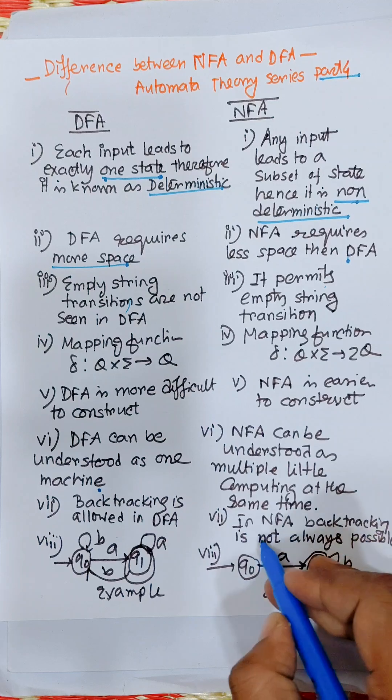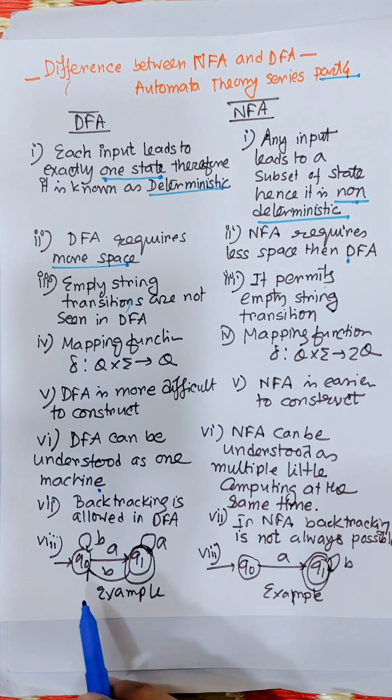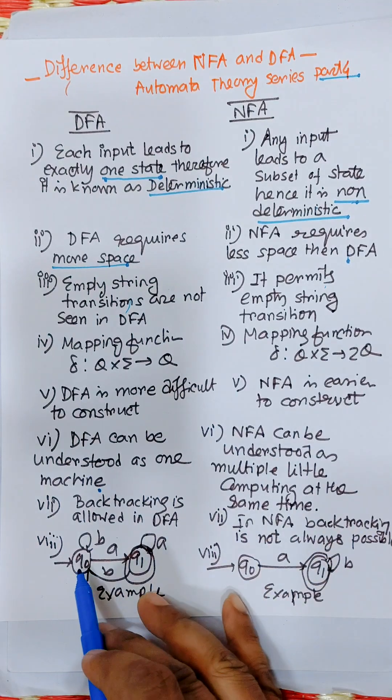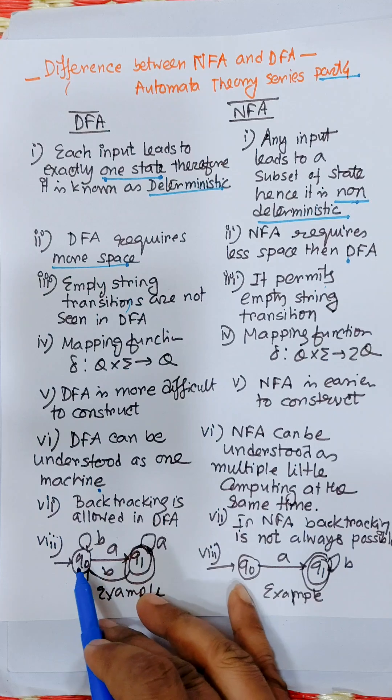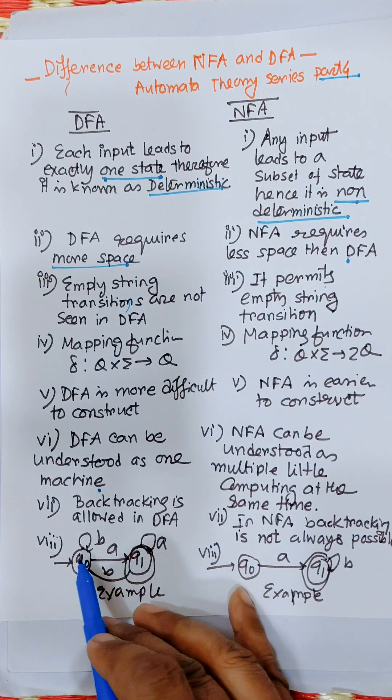Backtracking is allowed in DFA, but in NFA backtracking is not always possible.